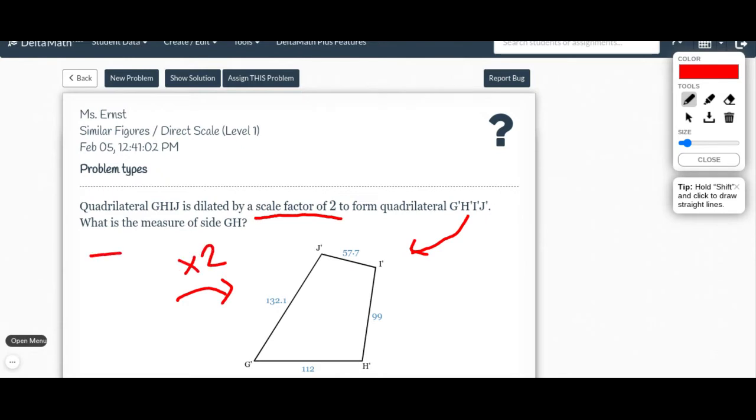So I'm going to really quick sketch out maybe what our original could have looked like, something somewhat similar to this. And we would have had side J here, I here it looks like, H, and G. And this would have been our original image.